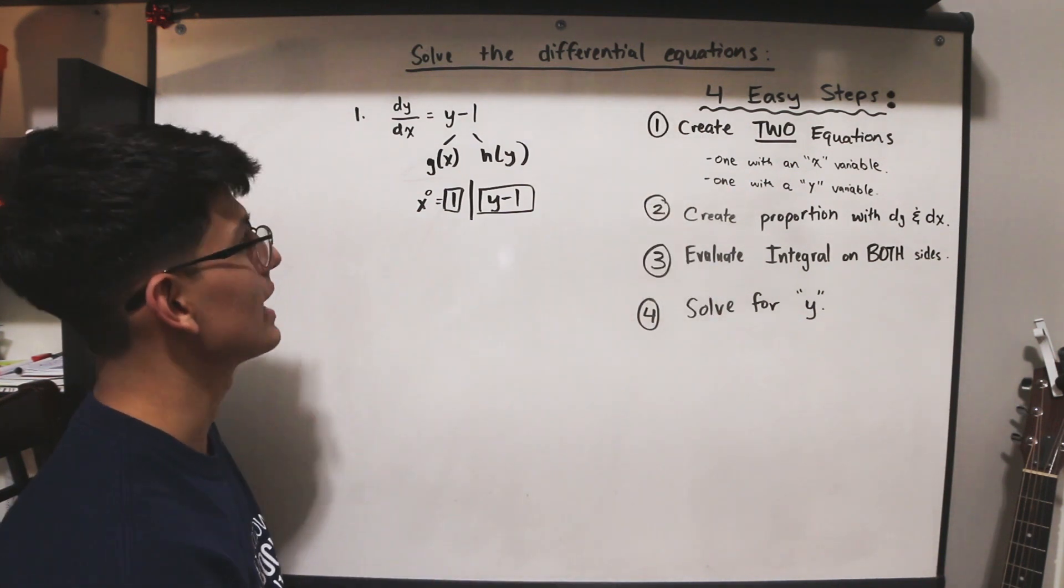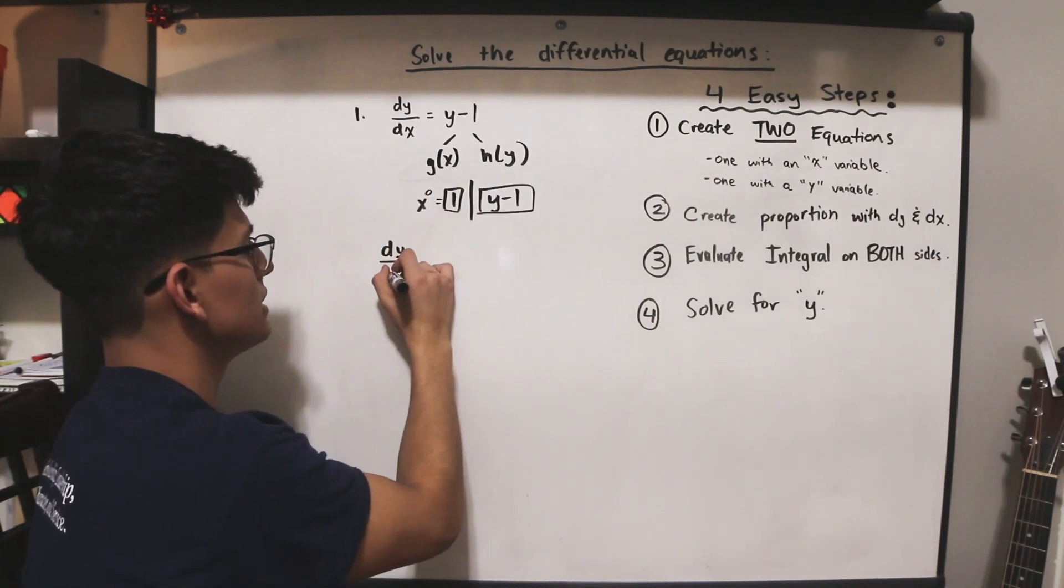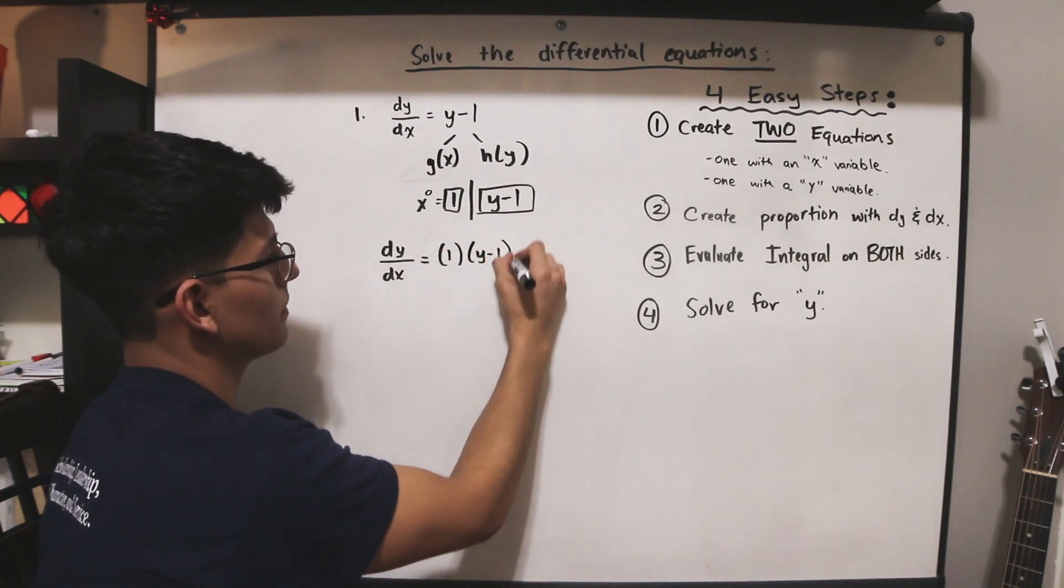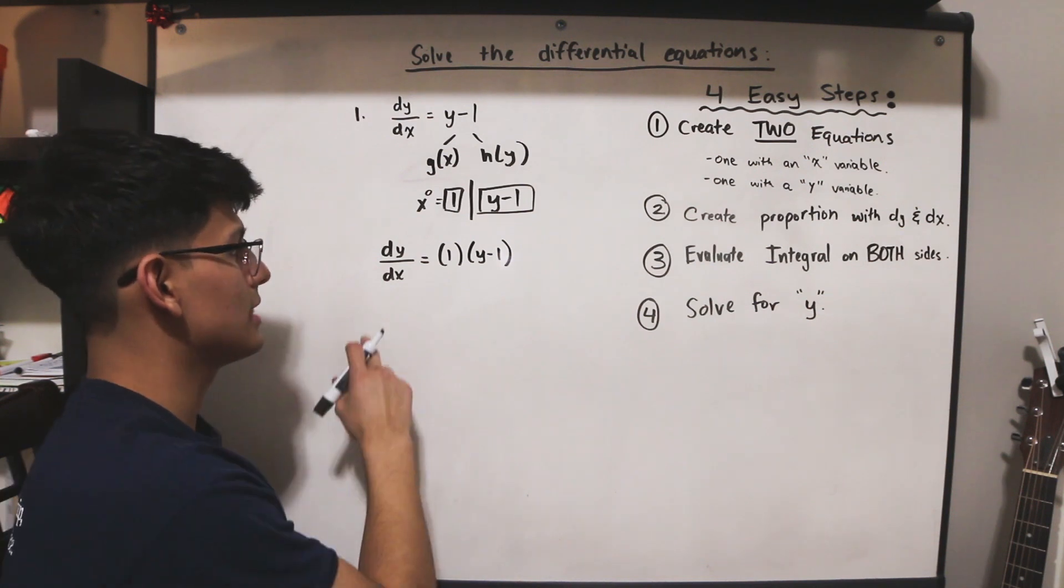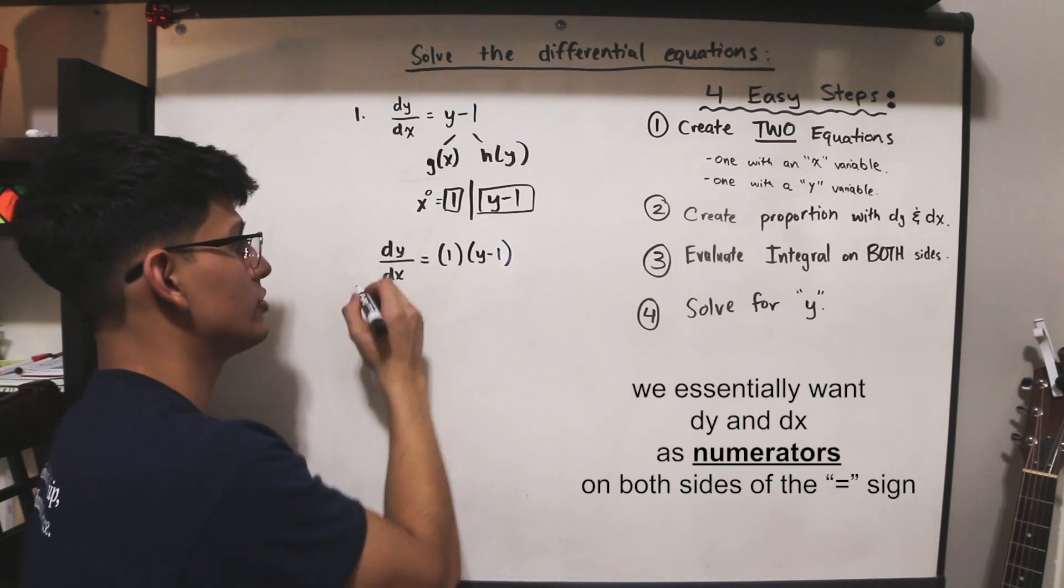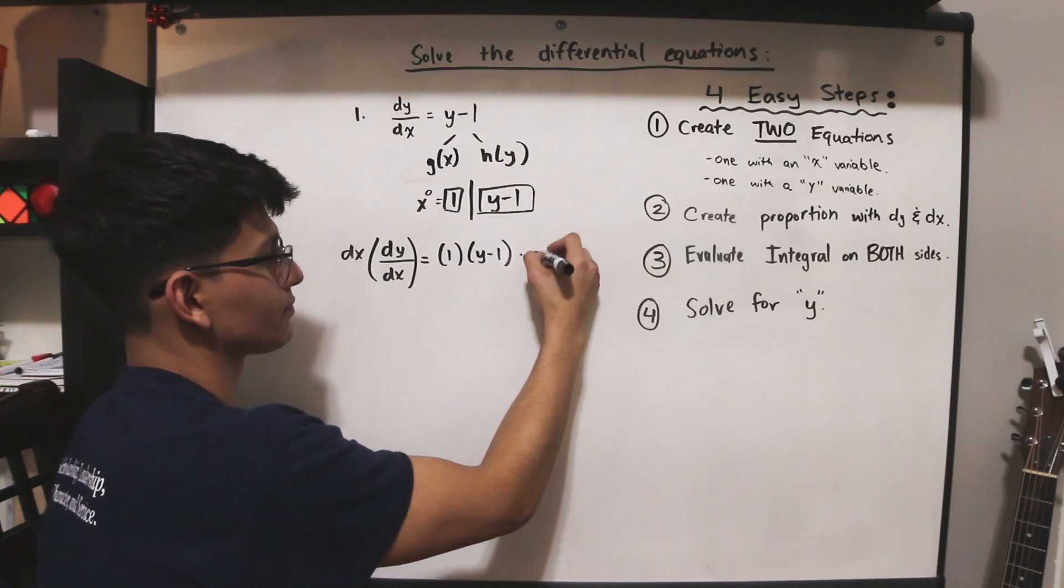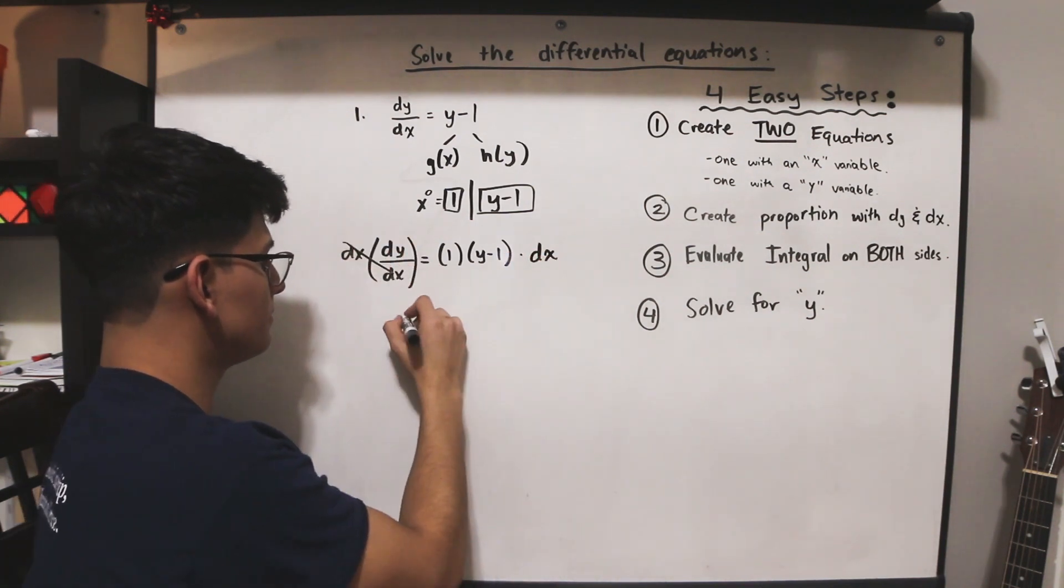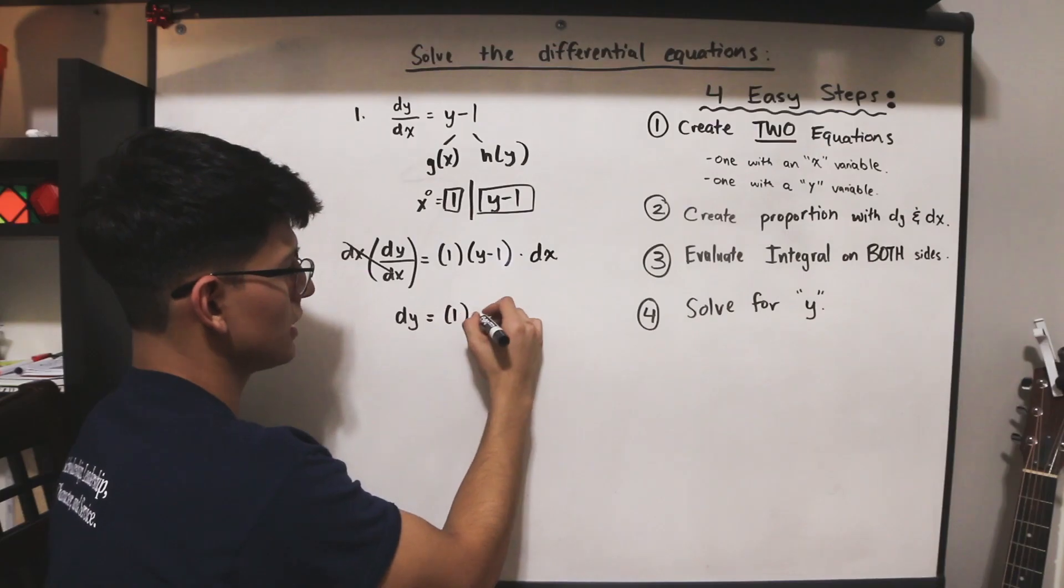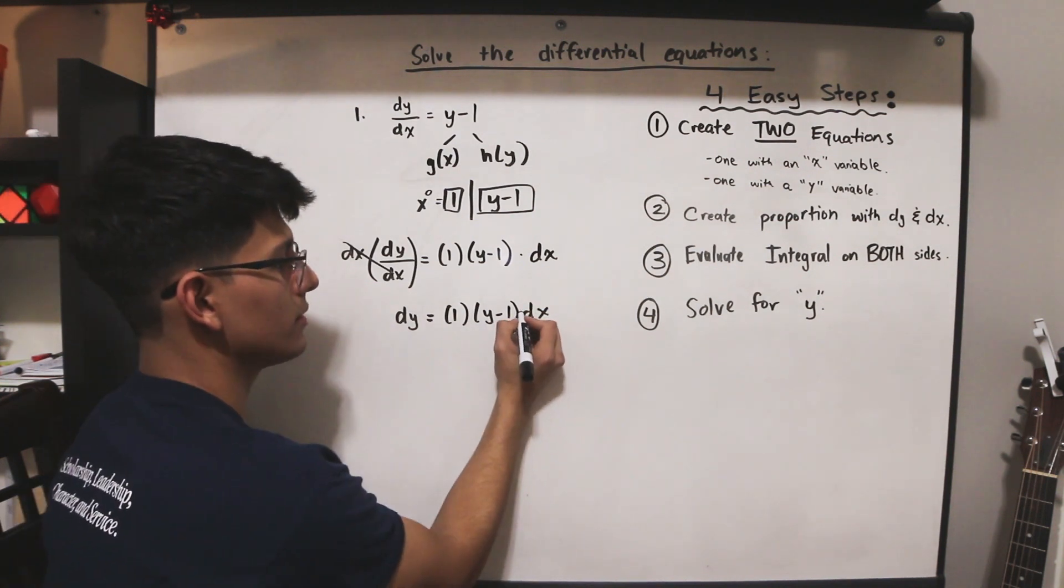Step two, create a proportion with dy and dx. So now that we have these two equations, we're going to write dy over dx is equal to 1 times y minus 1. And now we're going to create a proportion in that we're going to have both dy and dx as numerators. So in order to do that, we're going to treat dx as a quantity and we're going to multiply both sides by dx.